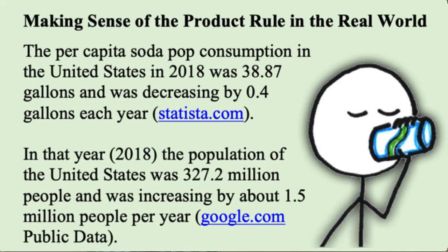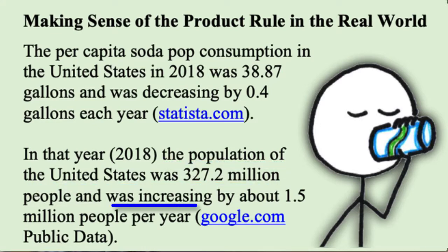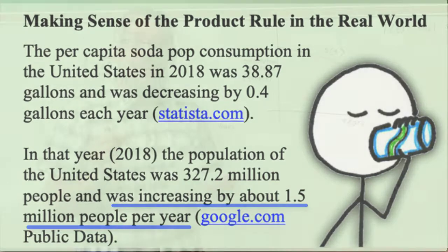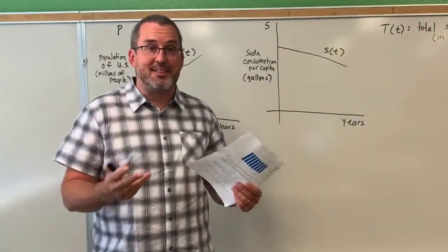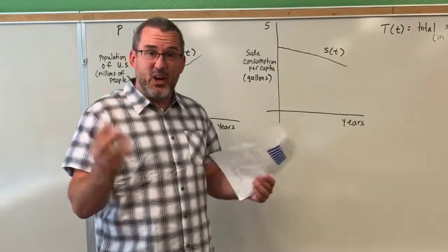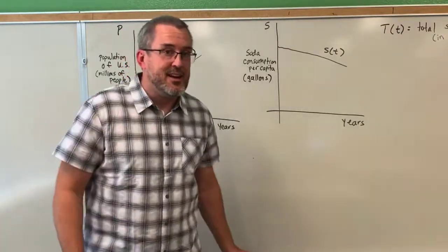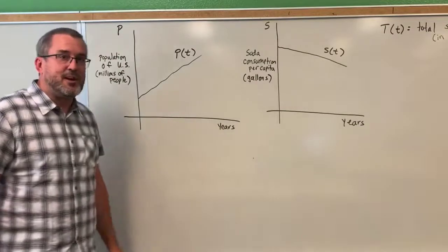In that year, 2018, the population of the United States was 327.2 million people and the population was increasing by about 1.5 million people per year. We're going to use that context to explore some things and ultimately use the product rule to help us make sense of what's happening in terms of population and the consumption of soda pop in the U.S.